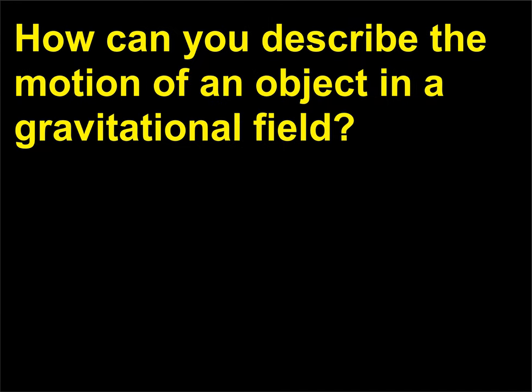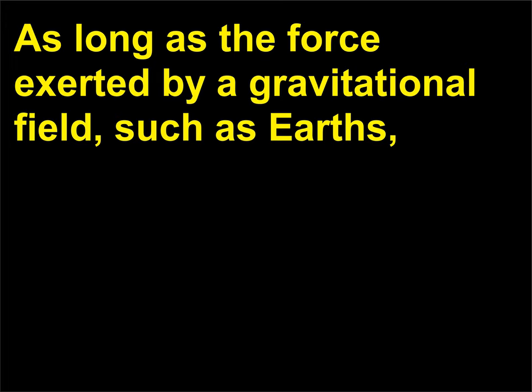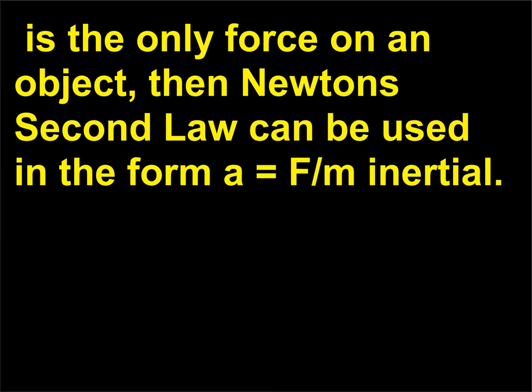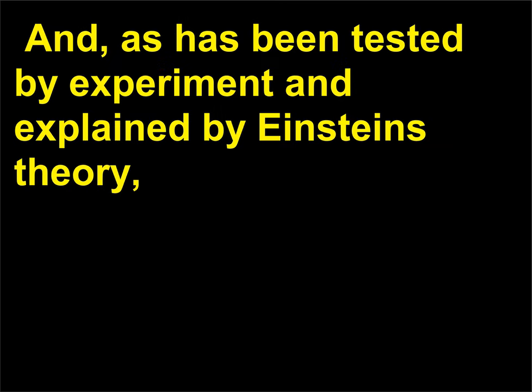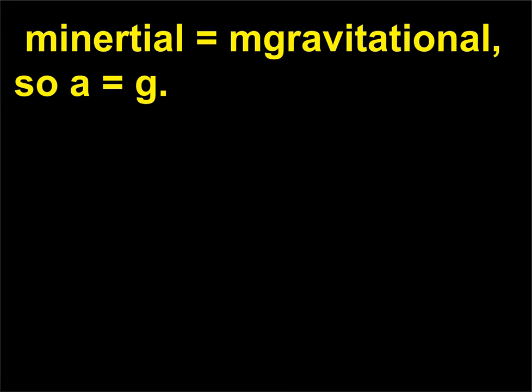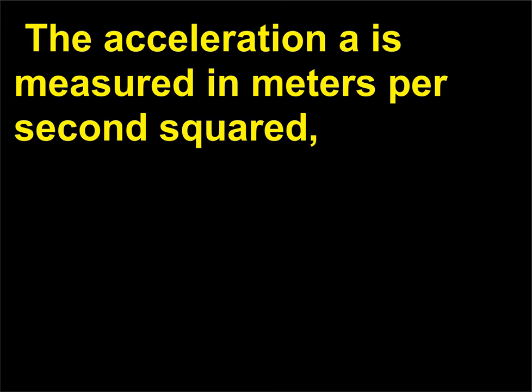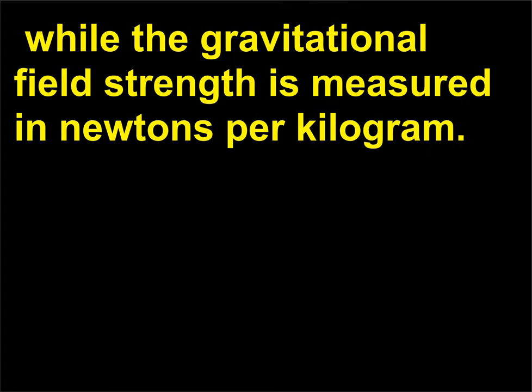How can you describe the motion of an object in a gravitational field? As long as the force exerted by a gravitational field, such as Earth's, is the only force on an object, then Newton's second law can be used in the form A = F / M inertial. But the force due to the field is given by F = M gravitational × g. And, as has been tested by experiment and explained by Einstein's theory, M inertial = M gravitational, so A = g. There is one more thing to question. The acceleration A is measured in meters per second squared, while the gravitational field strength is measured in newtons per kilogram.